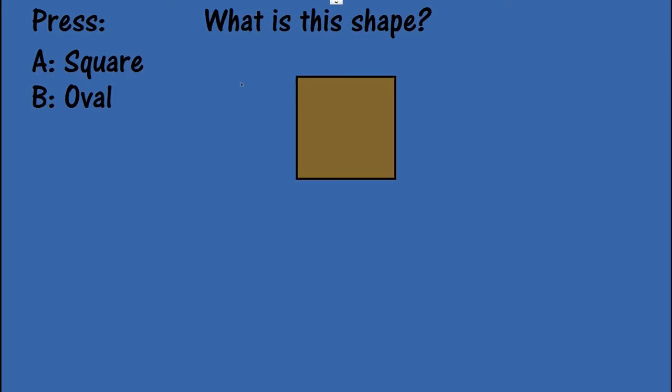If you press A for square or B for an oval. Let's press the letter B. You have the incorrect and a sound. If you press A. Correct.